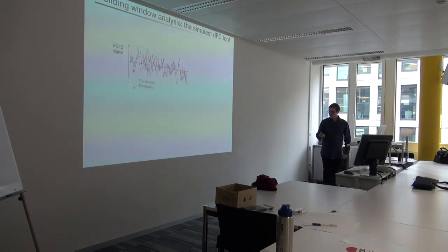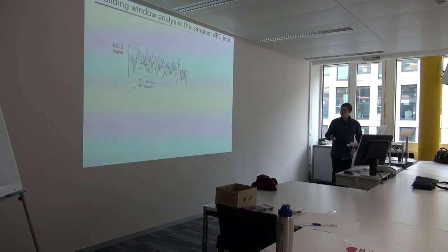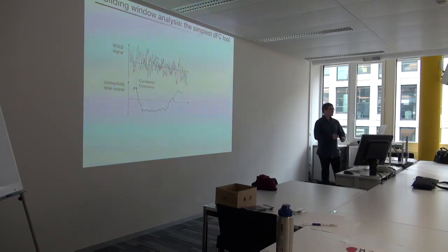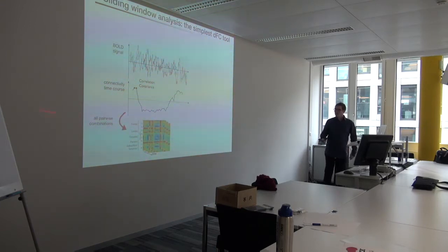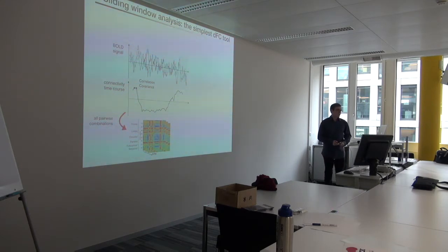The simplest approach is to take a temporal sub-window — a light gray window — and span the first time points from your time course, computing correlation or covariance between time courses only within this window. Then you shift this window by a time step and repeat iteratively until the end of the scanning session, gathering for two specific regions a connectivity time course describing their relationship over time. If you do this for all possible pairs of regions, at each moment you have a functional connectivity matrix, and across the whole time course you end up with a dynamic functional connectome.